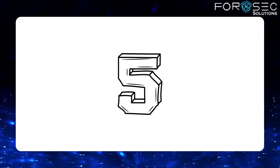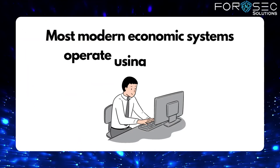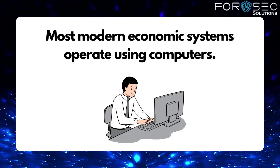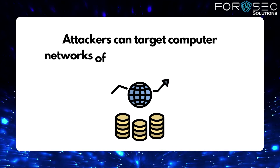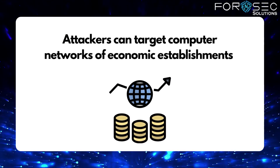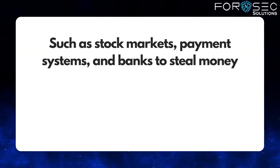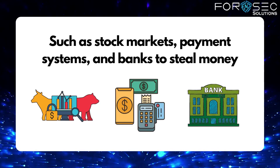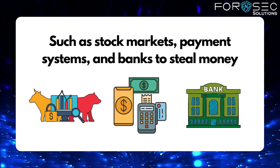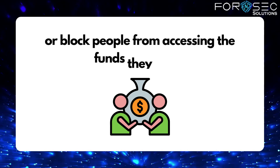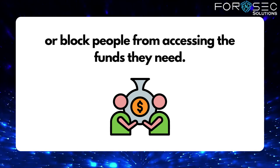Fifth is Economic Disruption. Most modern economic systems operate using computers. Attackers can target computer networks of economic establishments such as stock markets, payment systems, and banks to steal money or block people from accessing the funds they need.